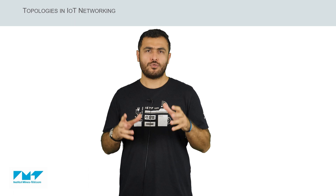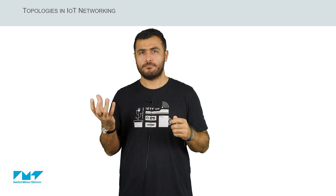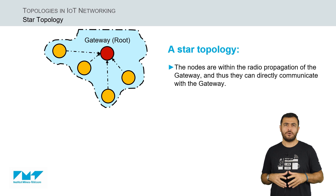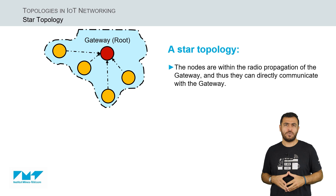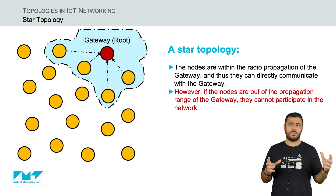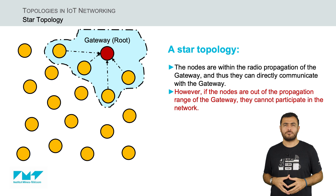The following are the most popular network topologies that can be formed to enable the nodes to connect to the gateway. First, we have the star topology, in which the nodes are within the radio propagation range of the gateway, and thus they can directly communicate with the gateway. The main advantage in this topology is its simplicity, meaning that the nodes only turn on their radio when they have something to transmit, which makes them very energy efficient. However, if the nodes are out of the propagation range of the gateway, they cannot participate in the network.